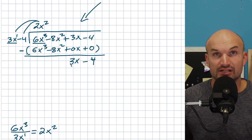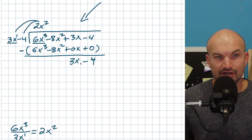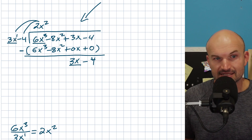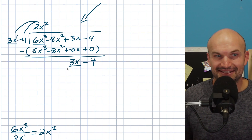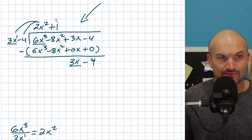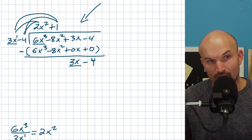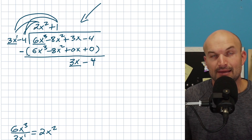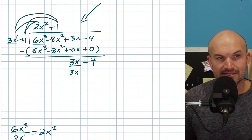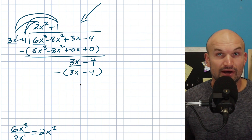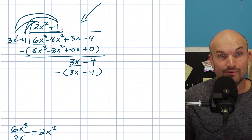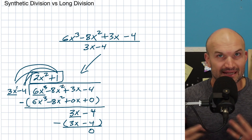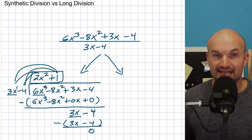Now we apply the long division algorithm again. We take the leading divisor term and divide it into our new remainder. 3x divided into 3x goes exactly one time. Then multiply 1 by both terms of the divisor: 1 times 3x is 3x, and 1 times negative 4 is negative 4. These are the same expressions, so when I subtract them I get a remainder of 0. My final answer is 2x² + 1. That was the long division — now what would we do via synthetic division?